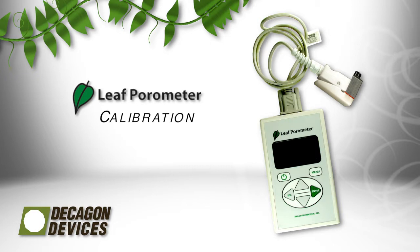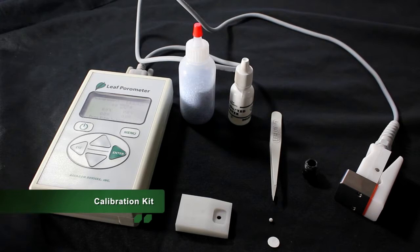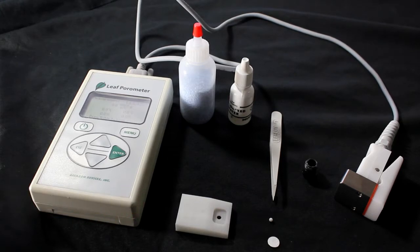It is especially important to recalibrate the porometer after you install the desiccant chamber. To perform your own calibration you will need a calibration kit from Decagon. If you do not have a calibration kit please contact support at decagon.com. Please have your sensor head serial number available.